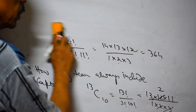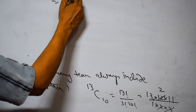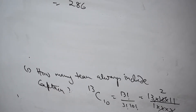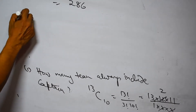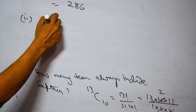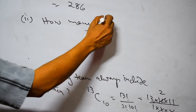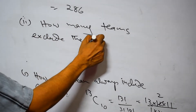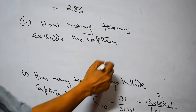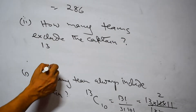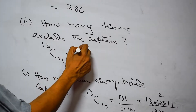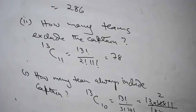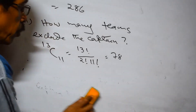The result is 286, not 278 — apologies for the earlier error. Now for the second part: how many teams exclude the captain? The captain is not included, so we have 13 remaining players and must still form an 11-player team. The result is 13C11, which equals 13 factorial divided by 2 factorial times 11 factorial, giving 78.